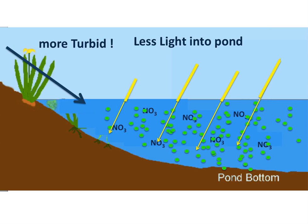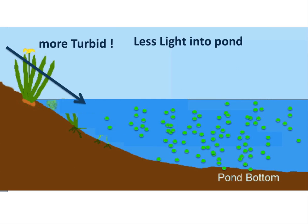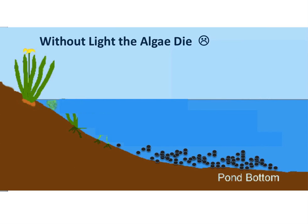Less light in the pond means less photosynthesis. Without photosynthesis, those algae die. Most things in pond ecosystems, when they die, settle to the bottom. In this case, all those healthy green algae are now dead, and they've settled to the bottom.